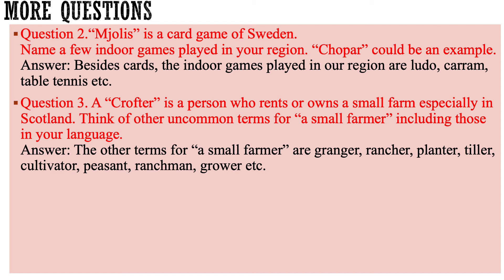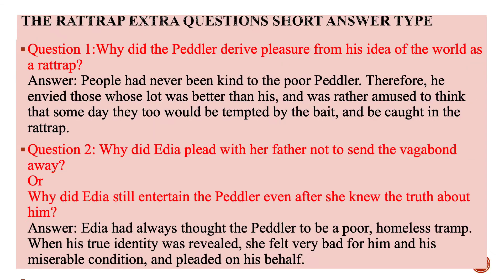A crofter is a person who rents or owns a small farm, especially in Scotland. Think of other uncommon terms for small farmer including those in your language. The other terms for small farmer are: granger, rancher, planter, tiller, cultivator, peasant, ranchman, and grower.